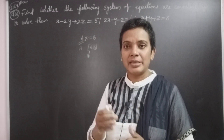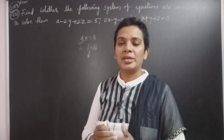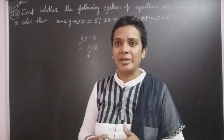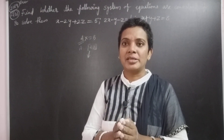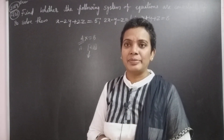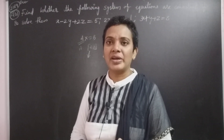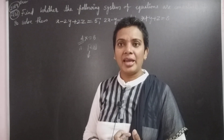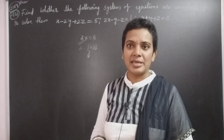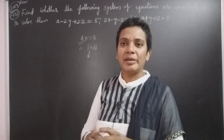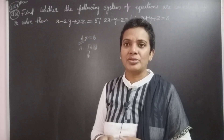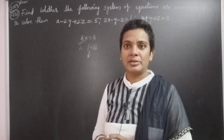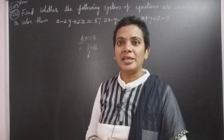That is nothing but the system has a solution. When it has a solution, the system is consistent. The solution also depends on the variables. A consistent system is divided into two types of solutions: one is a unique solution, another one is infinitely many solutions. Unique solution means the rank of A and AB are equal and that rank is equal to the number of unknowns, then the system has a unique solution. If the rank is less than the number of unknowns, then the system has infinitely many solutions.